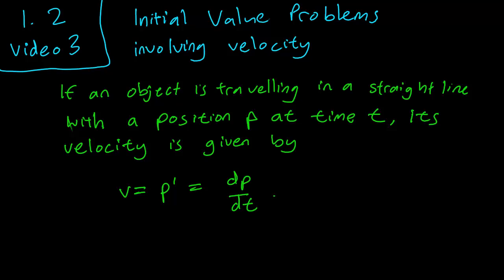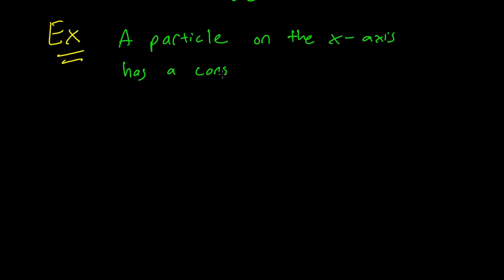Here is an example. A particle on the x-axis has a constant velocity of 2 meters per second.